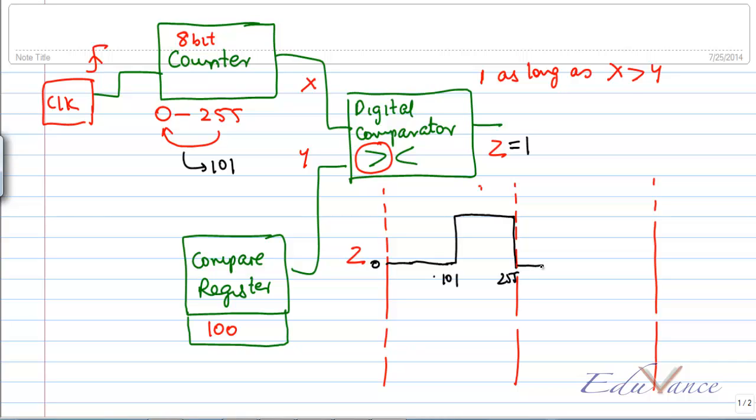And it starts the same thing again. Now for example, if I don't use the value 100, but let's say I use the value 200, then until my counter reaches 200 my output is still 0. And then once at 201 it goes to 1 until 255.